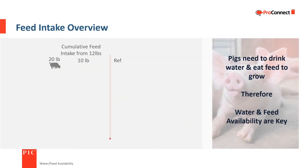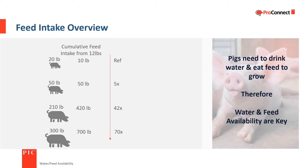Feed is a major cost of wean-to-finish production. This graphic shows how feed intake goes up as the pig grows. A 12-pound weaned pig will eat 10 pounds of feed to reach 20 pounds of body weight, 50 total pounds of feed to get to 50 pounds, 420 total pounds of feed to reach 210 pounds, and will consume a grand total of 700 pounds of feed to reach 300 pounds. In other words, a weaned pig needs to consume 70 times as much feed to get to 300 pounds as it did to reach 20 pounds.